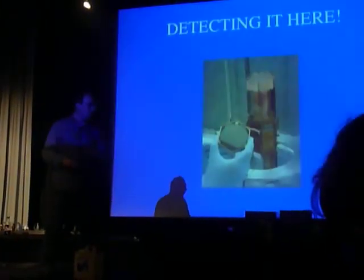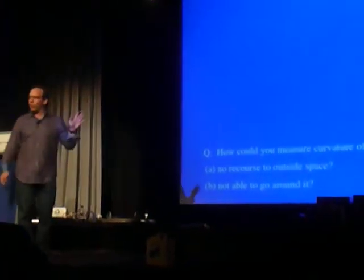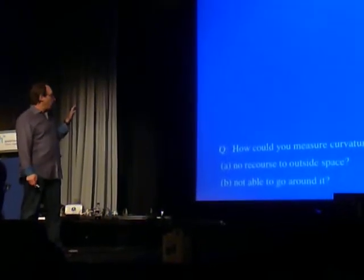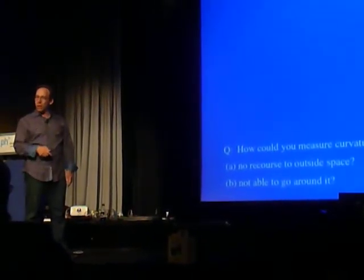And that's something else we've been able to do in the last decade. Now, in order to understand it, we can ask the simpler question. How would you measure the curvature of the Earth if you couldn't go in outer space and look at it? If you couldn't go around the Earth, how could you measure the curvature?